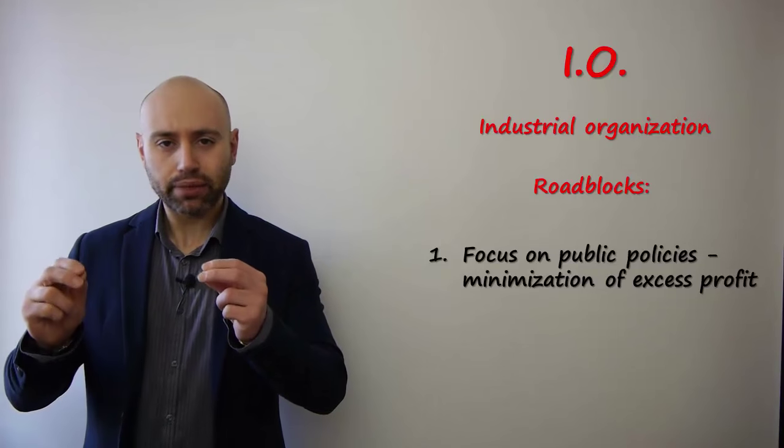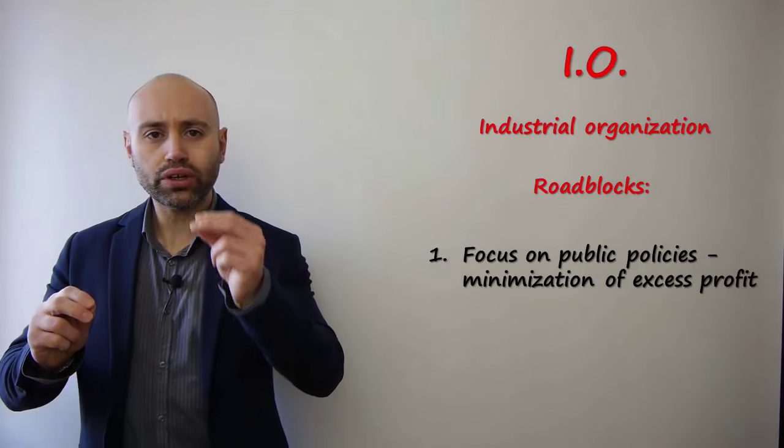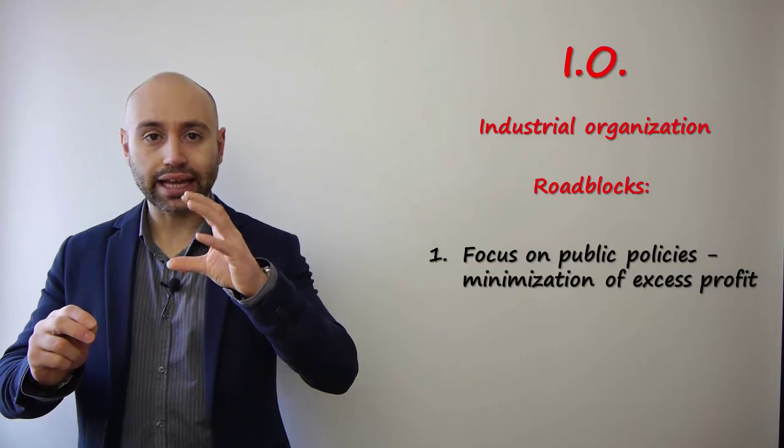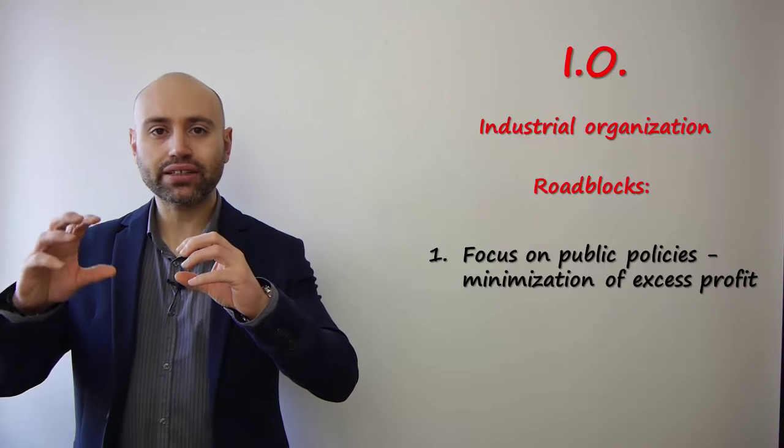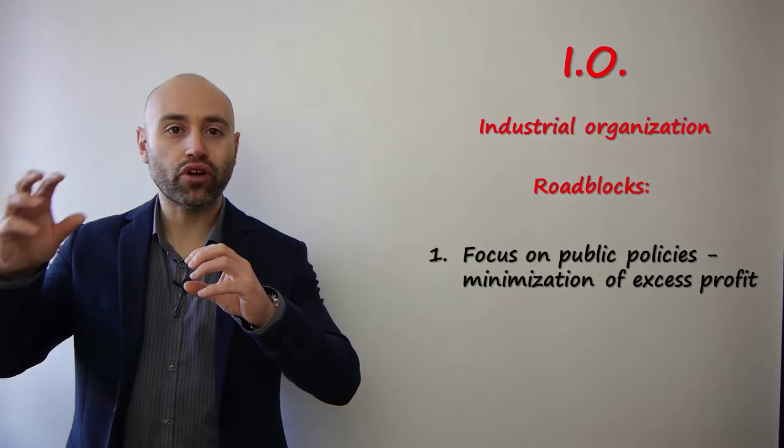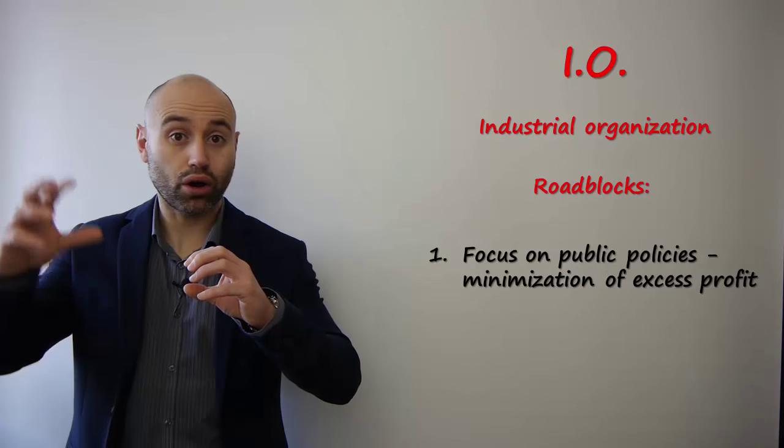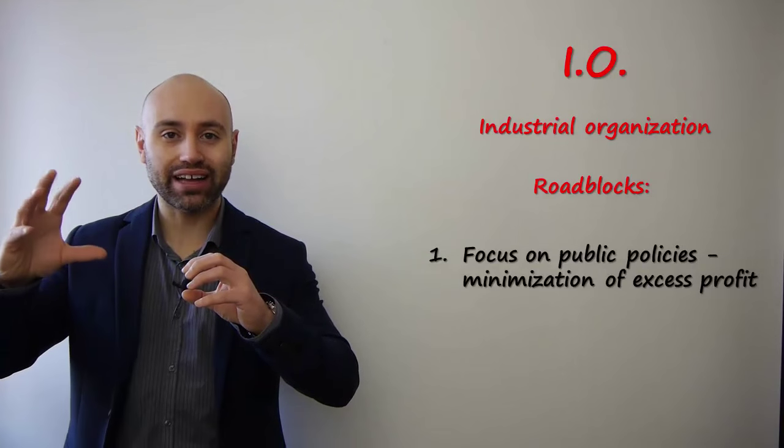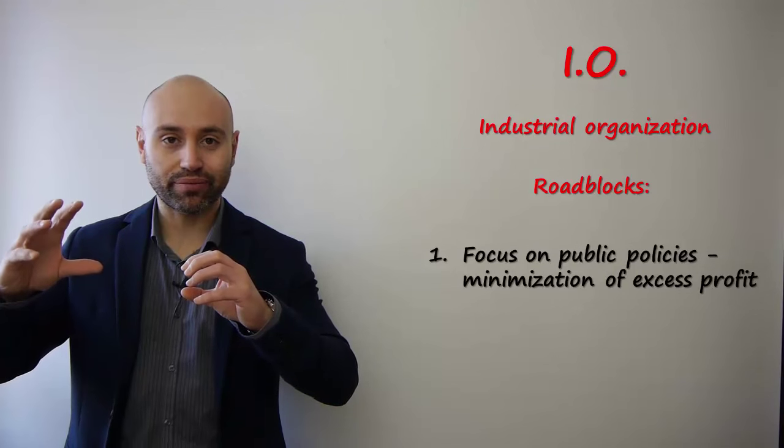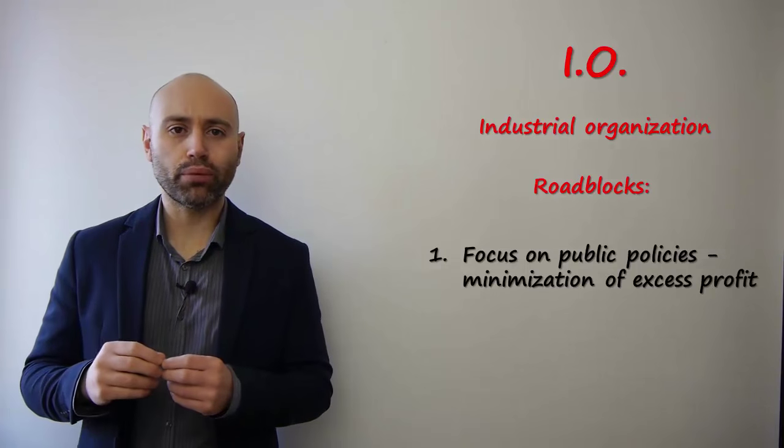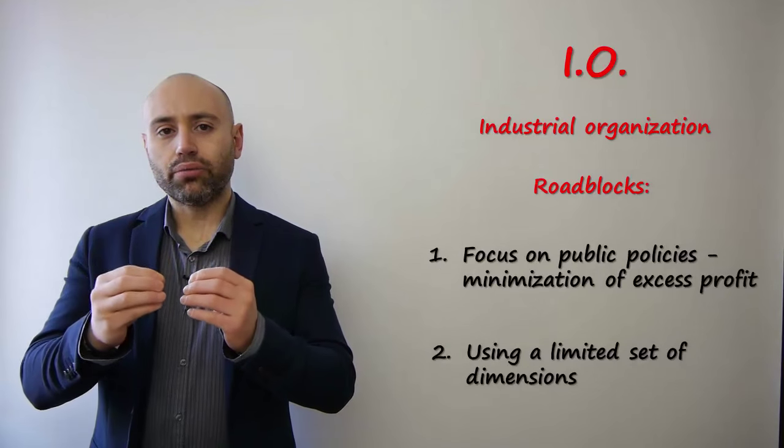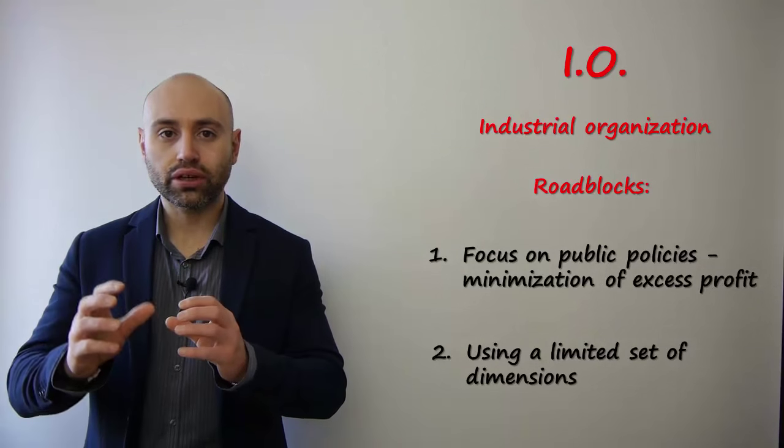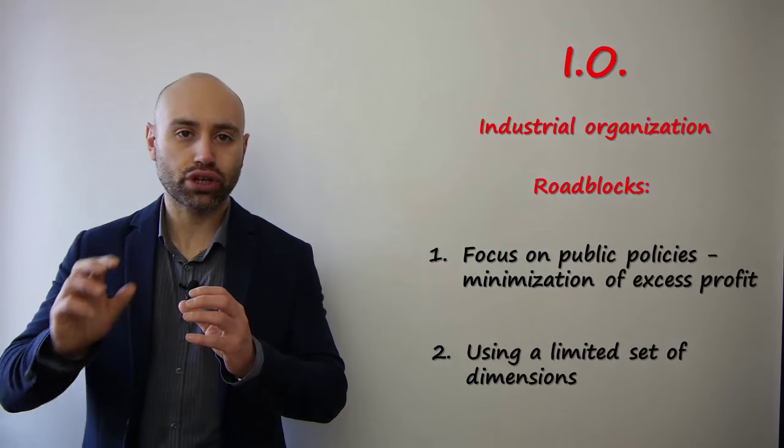This means that economists always try to find a way to minimize the excess of profit rather than embracing the point of view of private organizations, companies, which try to maximize the return of profit. And the second problem is that industrial economists try to define only a few dimensions in order to explain industry profitability.